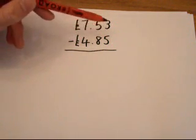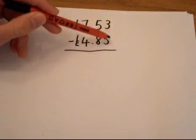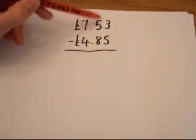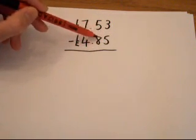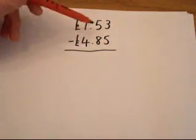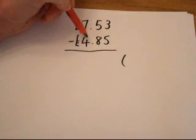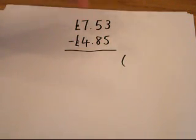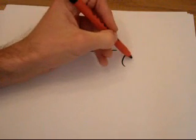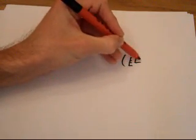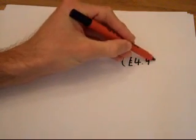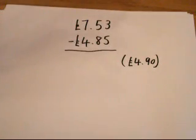From £4.85, what's the nearest tenth I could count up to, or the nearest ten pence? That's going to be £4.90 because from £4.85 the nearest ten pence I could go up to is £4.90. I'm going to put £4.90 just on the side in brackets so I can remember that's where I'm going up to.